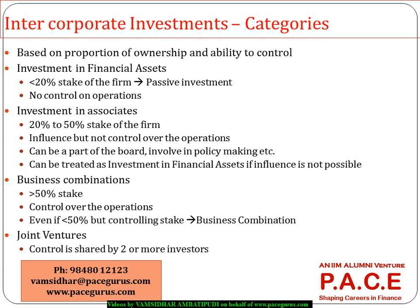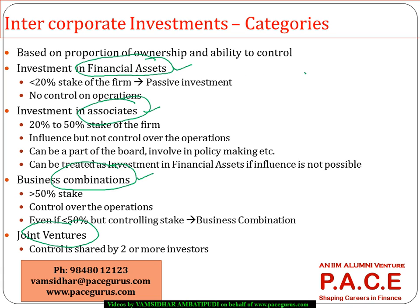The prime categories we talk about when it comes to intercorporate investments are how they are classified. Majorly, we see them classified into four categories: investments in financial assets, investment in associate firms, business combinations, and joint ventures. Whenever a company invests in another firm, that investment gets classified into one of these four categories.